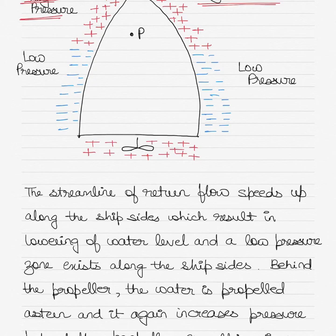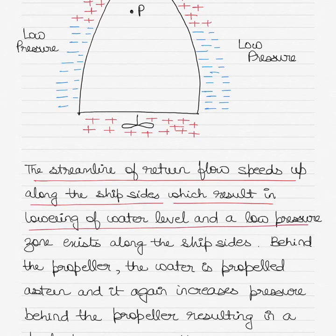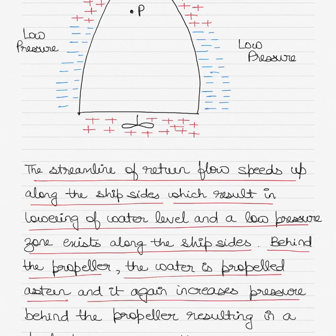The streamline of return flow speeds up along the ship sides, which results in lowering of water level and a low pressure zone exists along the ship sides. Behind the propeller, the water is propelled astern and it again increases pressure behind the propeller, resulting in a high pressure zone there.